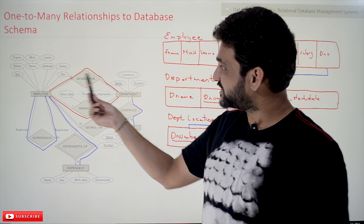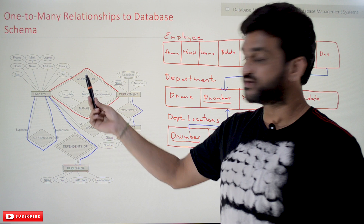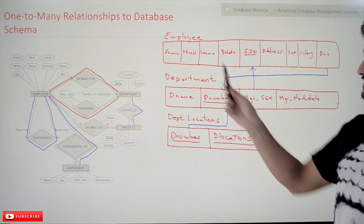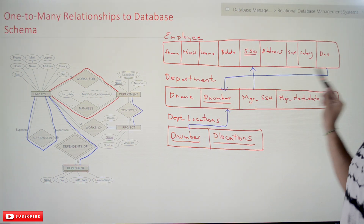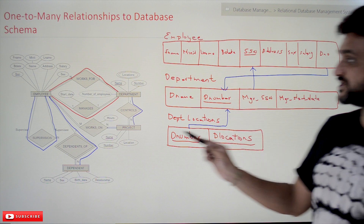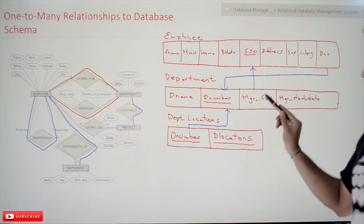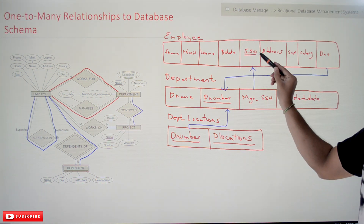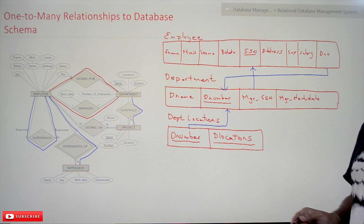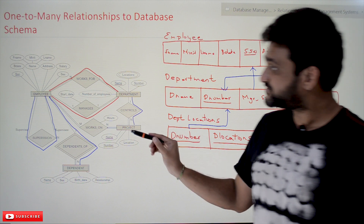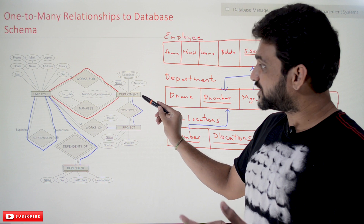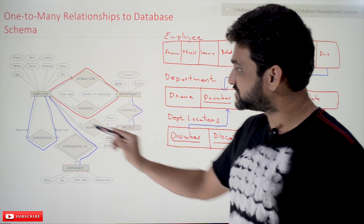So far, one of the one-to-many relationships has been converted in our previous video. The relationship is D number to D number, and manager SSN to SSN has already been converted in our previous videos. In this video, we are going to convert the remaining one-to-many relationships.